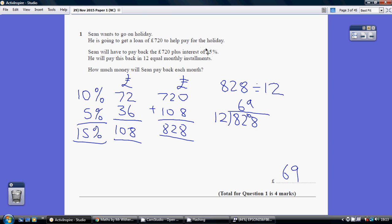Well always start off on a non-calculator paper by doing the building blocks method and start off with 10%. Now 10% is a tenth. So what's a tenth of 720? Well that's 72. Now having established that 10% is 72, 5% being half of 10% must be half of 72 which is 36.